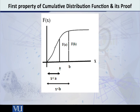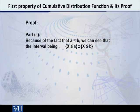Now let us also look at the rigorous proof of this theorem. The first thing is that because of the fact that A is less than B, we can see that the interval X being less than or equal to A is a subset of the interval X being less than or equal to B.